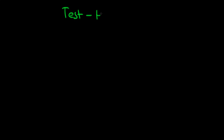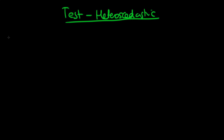Hi there. In this video we're going to talk about how we actually go about testing for heteroskedasticity. The test we're going to talk about is called the Goldfeld-Quandt Test. It's probably the most simple of tests for heteroskedasticity, but it's quite a nice one because it has a very intuitive interpretation.